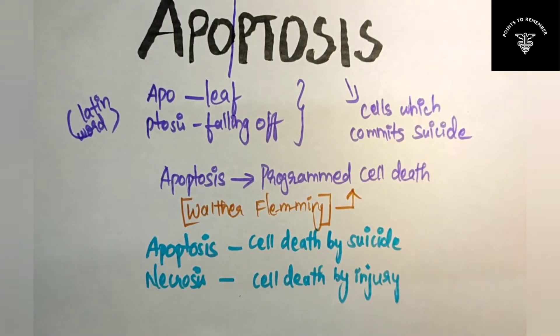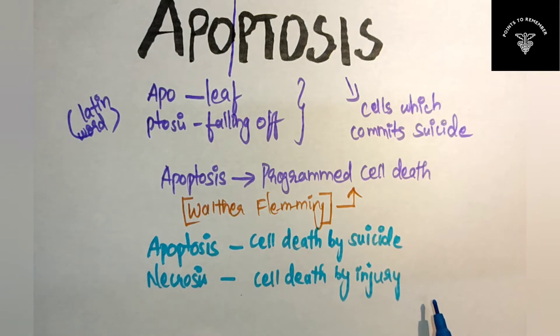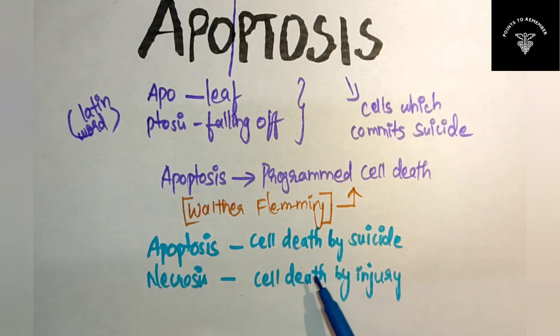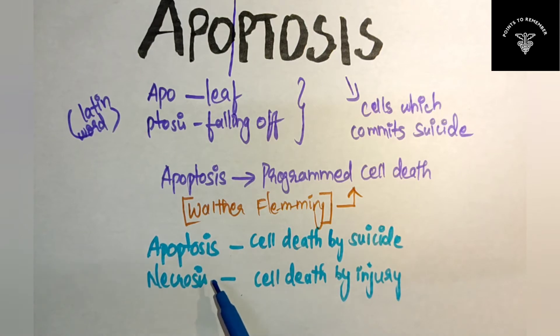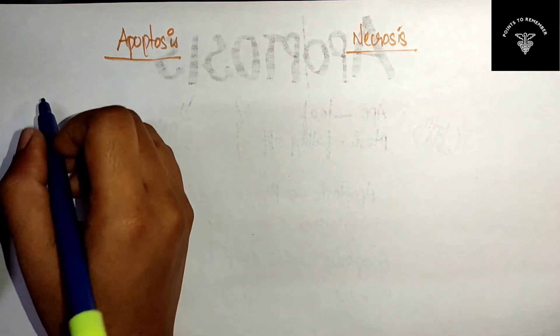Necrosis is cell death by injury. If some trauma or injury happens, then there will be cell death — that is known as necrosis. If the cell dies on its own, like suicide, then it is known as apoptosis. After writing your definition of apoptosis, you just have to mention who gave the term 'programmed cell death,' and then give five simple differences between apoptosis and necrosis.